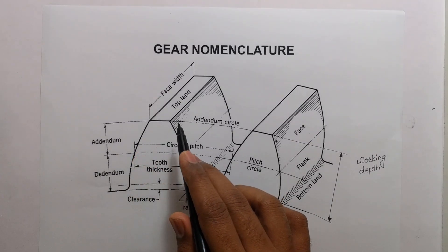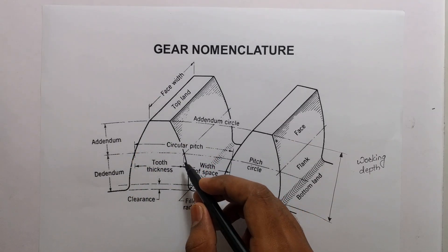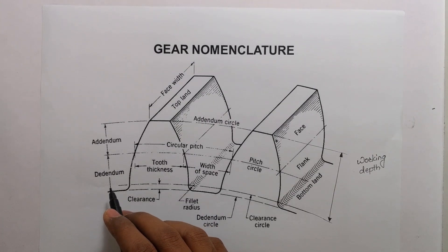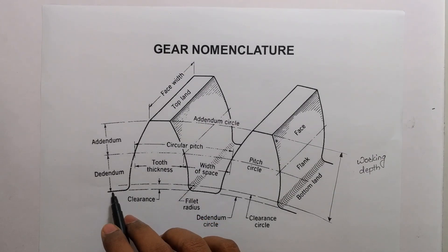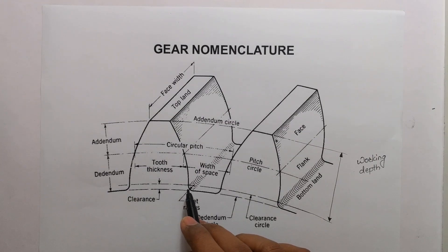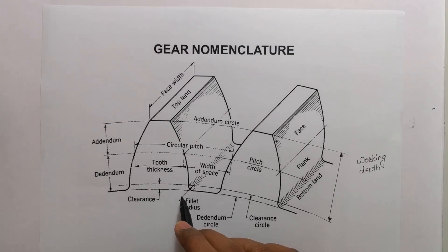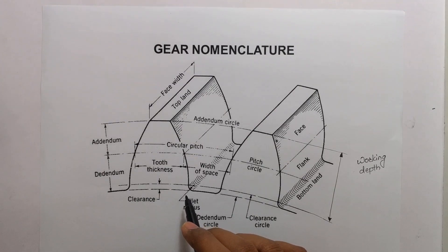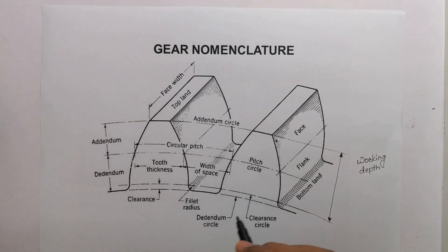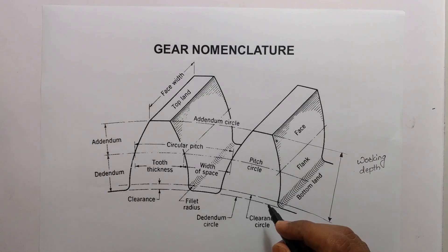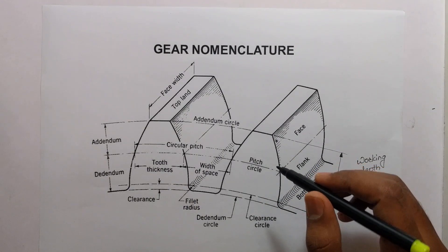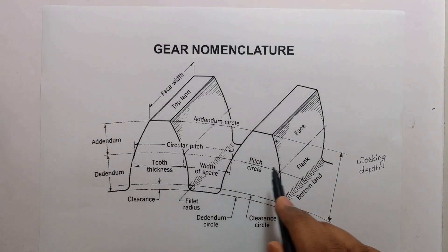The addendum circle is drawn through the top of the teeth and is concentric with the pitch circle. The dedendum circle is drawn through the bottom of the teeth, also concentric with the pitch circle. The dedendum circle is also called the root circle.